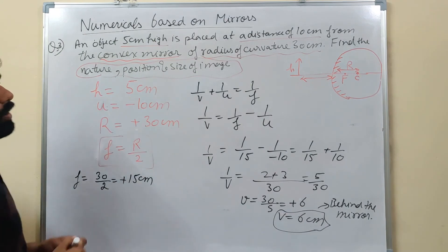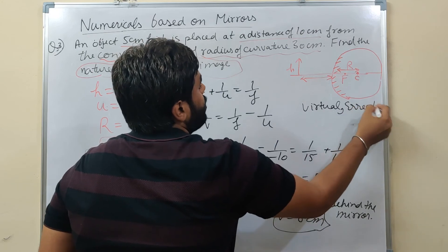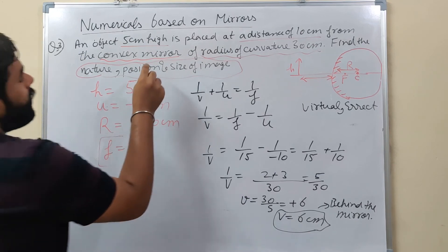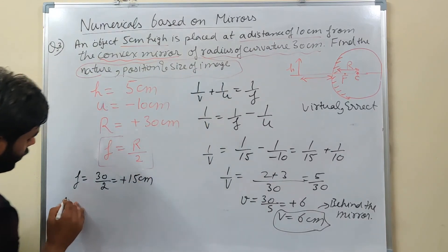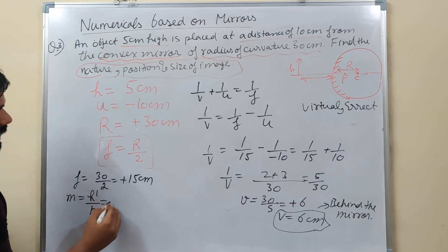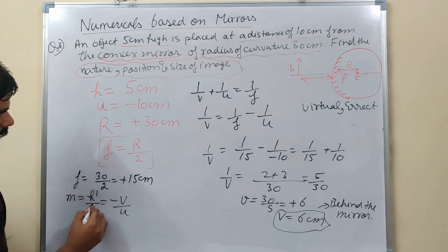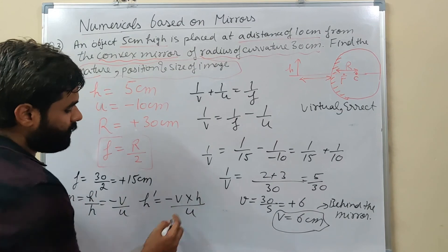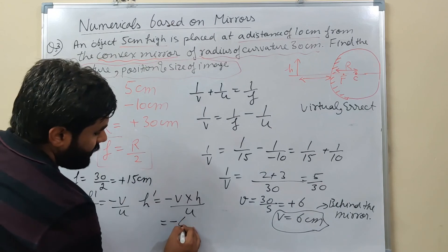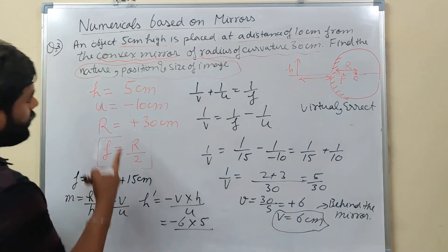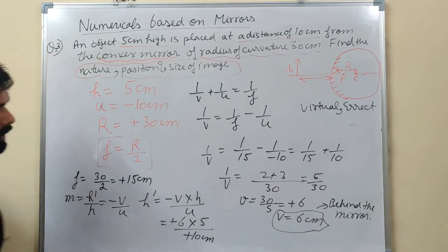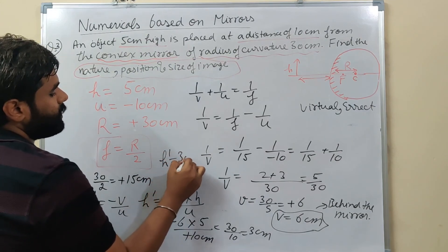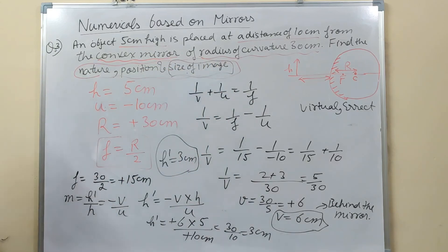Now finding size of image: h-dash = (-V × h) / U. V = +6 cm, h = 5 cm, U = -10 cm. So h-dash = -(6) × 5 / (-10). Minus times minus cancels: 6 × 5 = 30, divided by 10 = 3. So h-dash = +3 cm. Size of image = 3 cm.